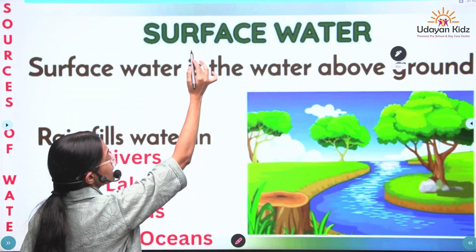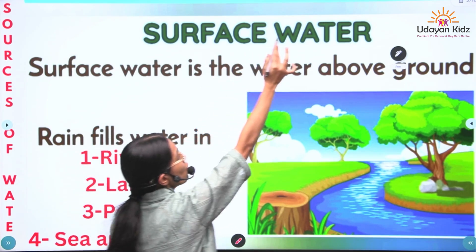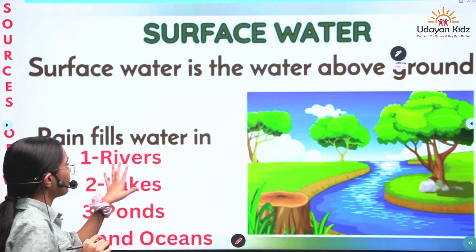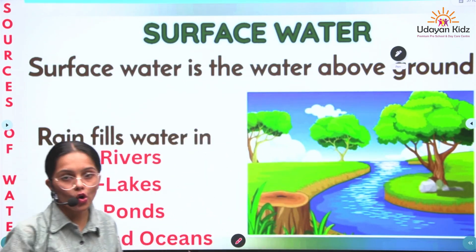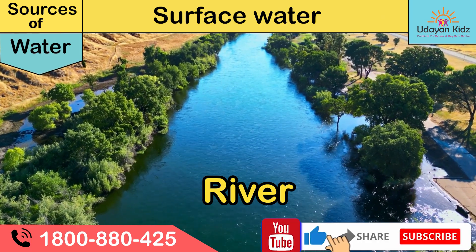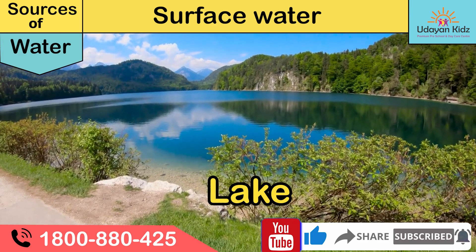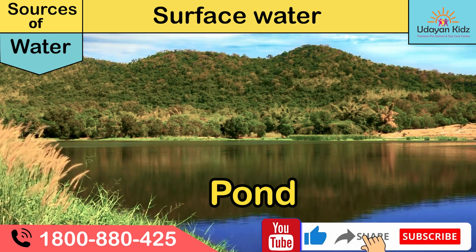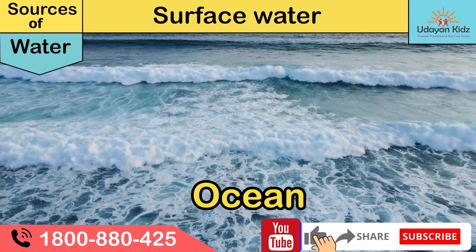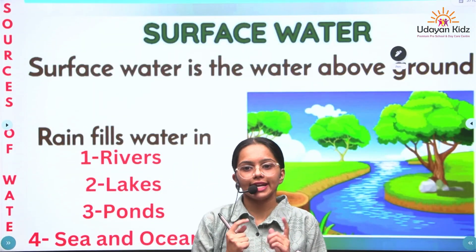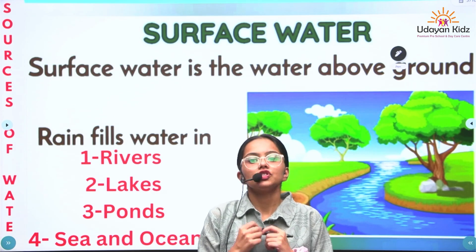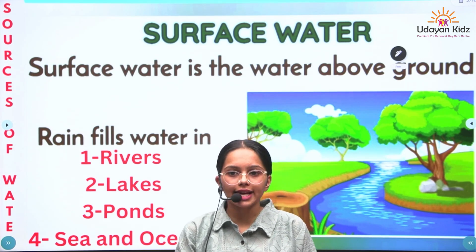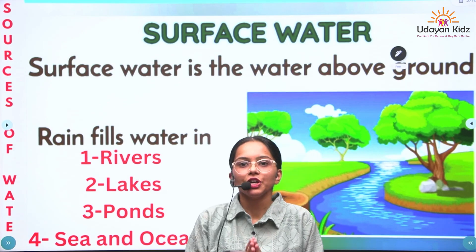Second one is surface water. Surface water is the water above ground like river, lakes, ponds, seas and ocean. Surface water is the water that exists on the earth's surface in sources like rivers, lakes, ponds and ocean.